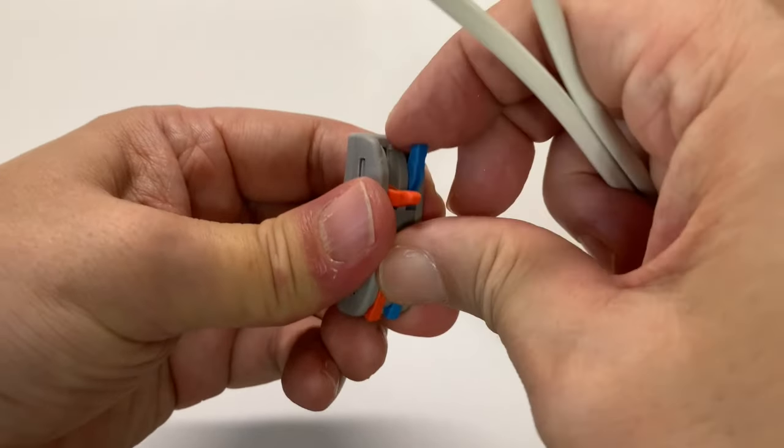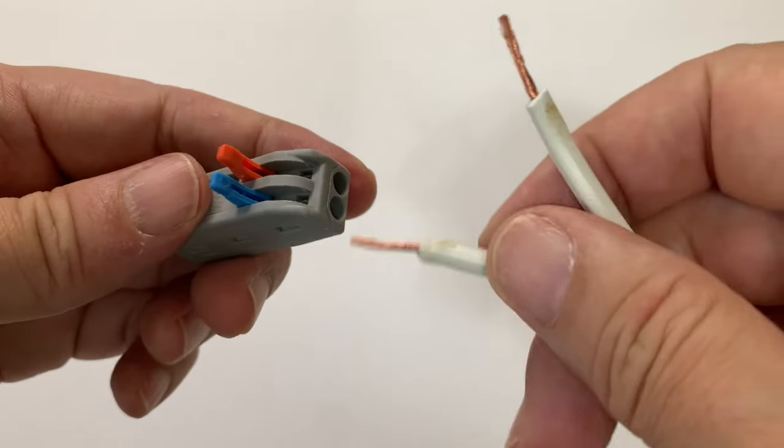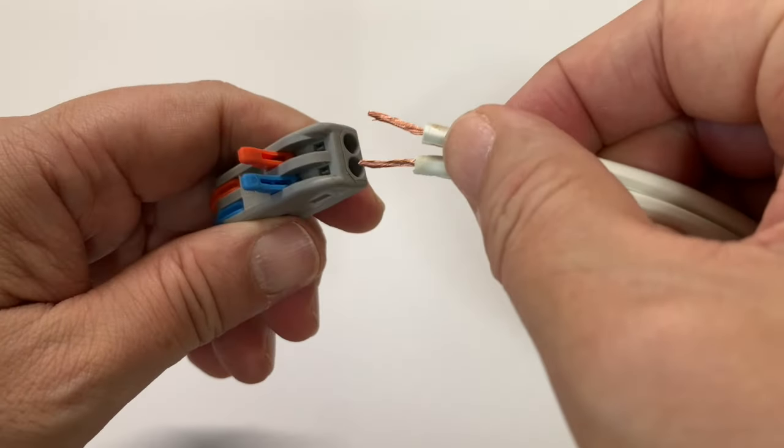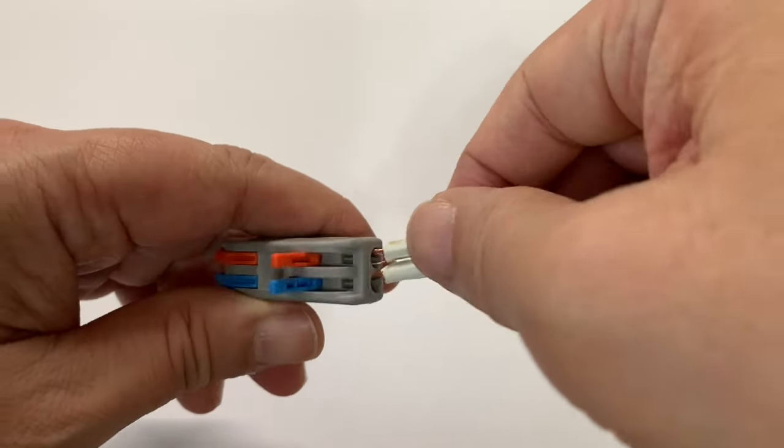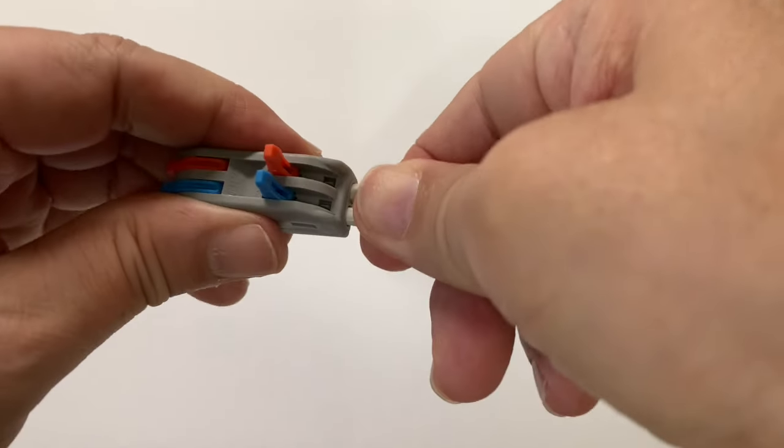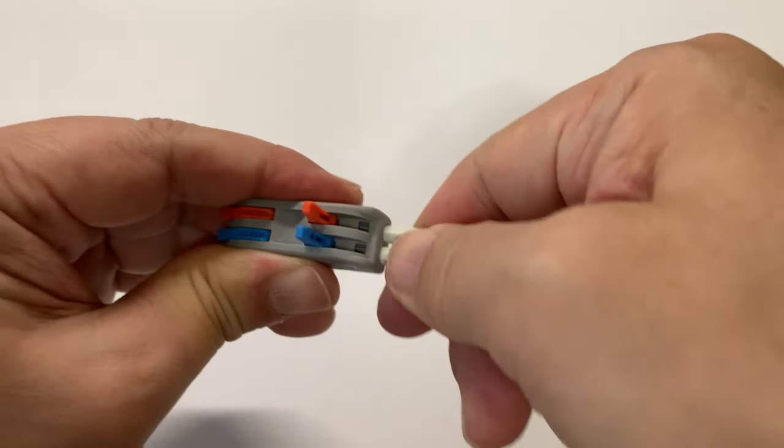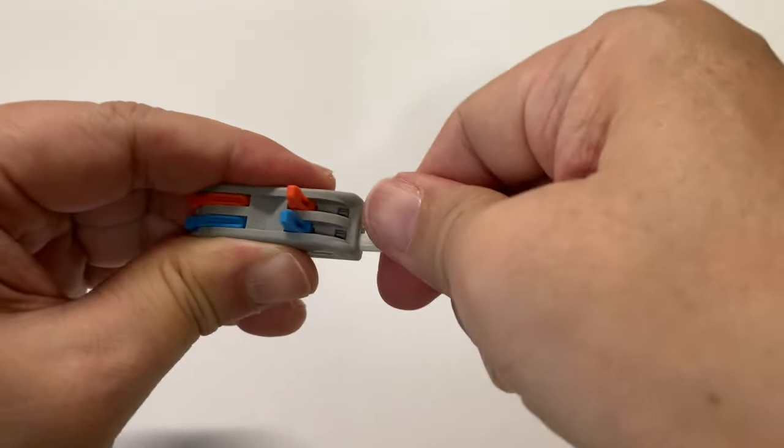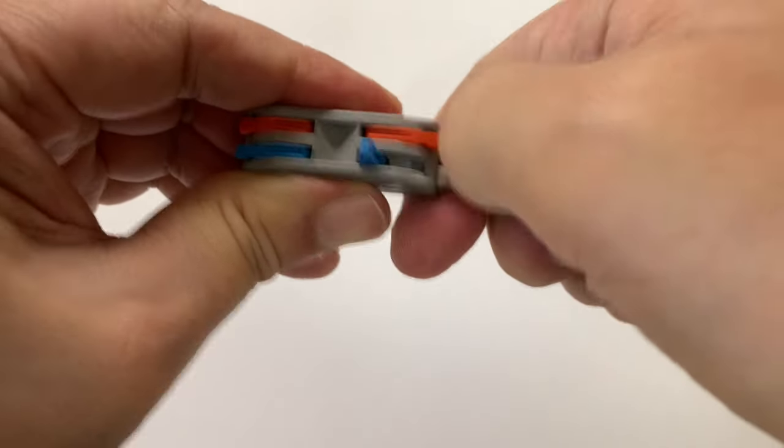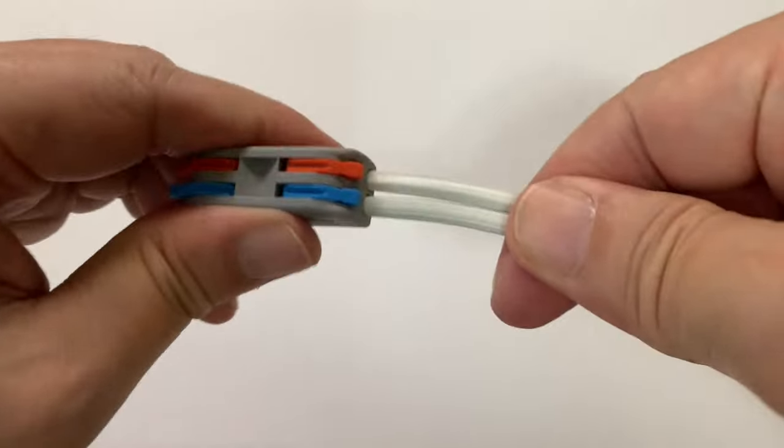Open both levers of one side, then insert the wire all the way before closing the levers. Perform a pull test to make sure.